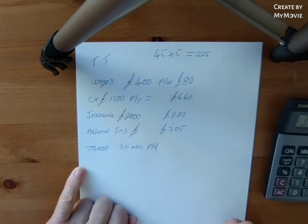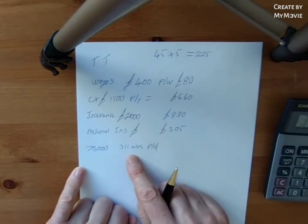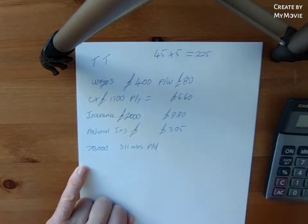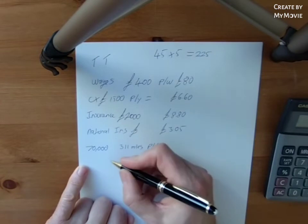But then that doesn't really help us as a cost. We need to understand that in terms of what the fuel is going to cost us. So if the fuel is £1, if we have 70,000 miles, let's say your van does 50 miles to the gallon.